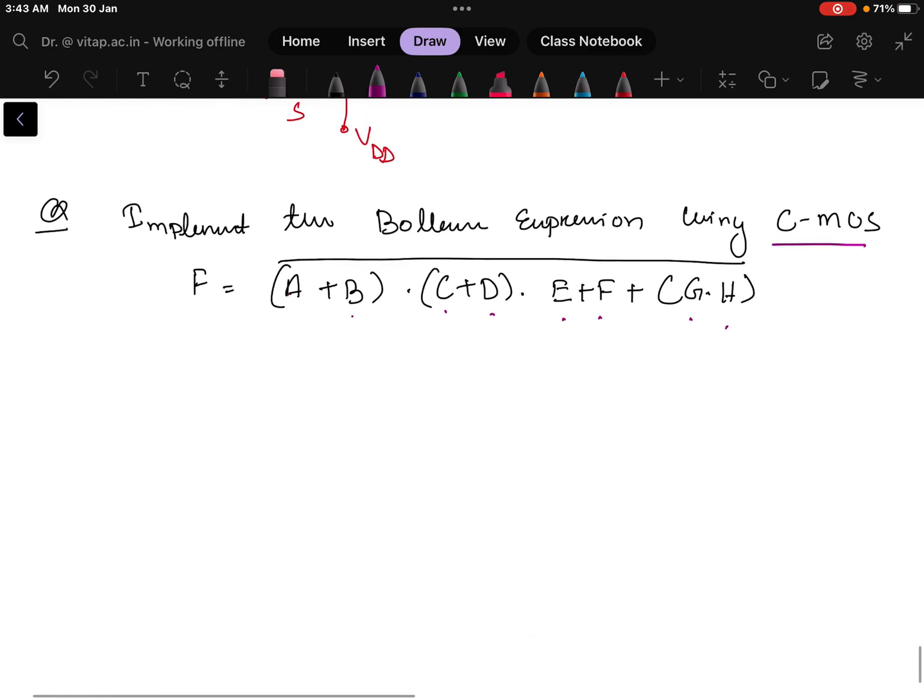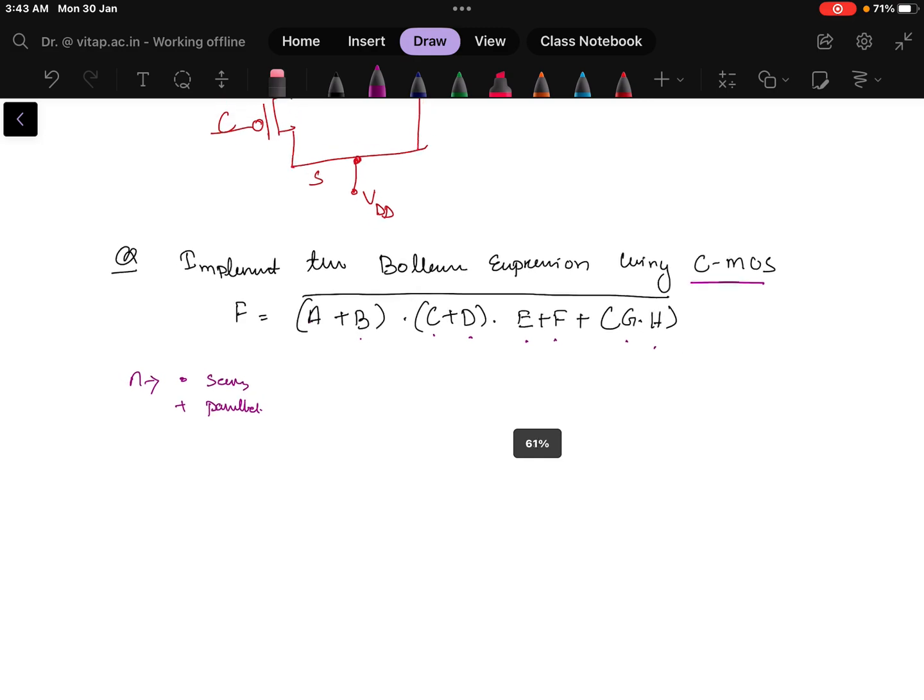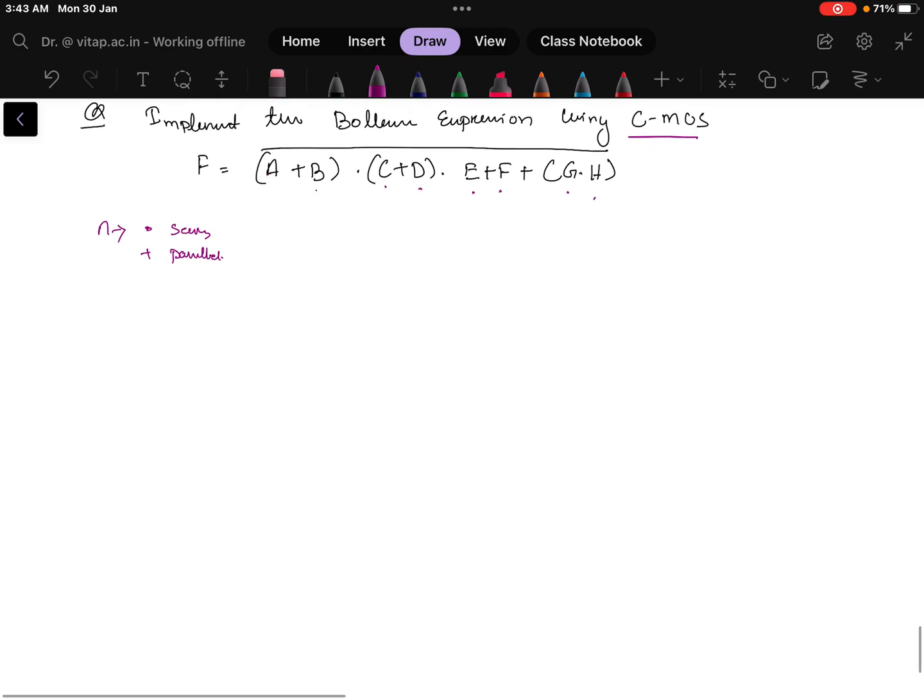What to follow? First draw the NMOS and for the NMOS we know dot means series and plus means parallel, and when you are doing for PMOS it will be opposite to that. Remember always try to put the NMOS in the below side so confusion will be less but you can put in the upper side also.